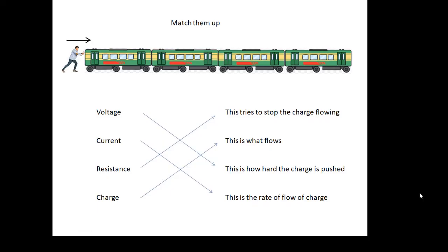Voltage. This is how hard you're pushing the charge. You're pushing it. That's the pressure from the pump. The voltage. Current is the rate of flow of charge. Charge is the stuff which is actually flowing. You can think of it as electrons, if you like. And then resistance. This tries to stop the charge from flowing. A bit like friction.